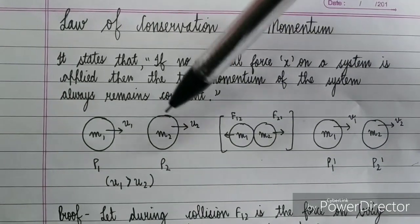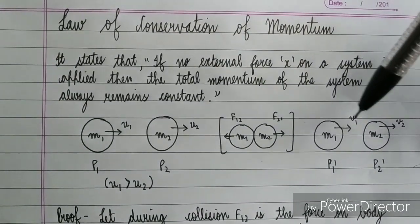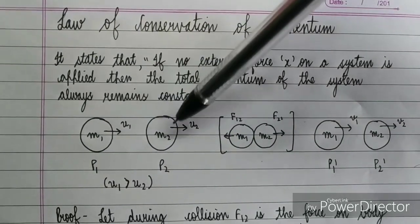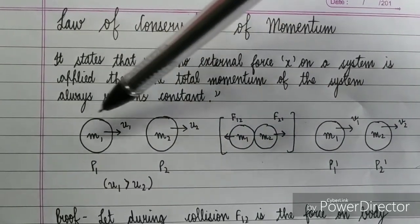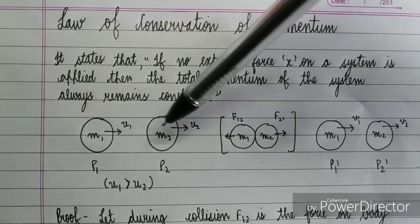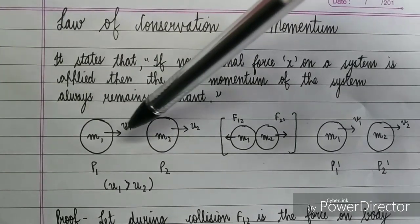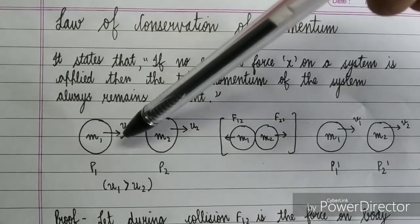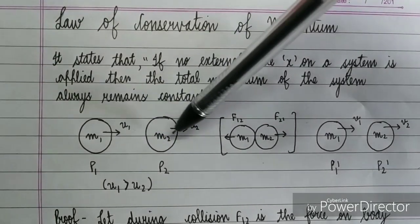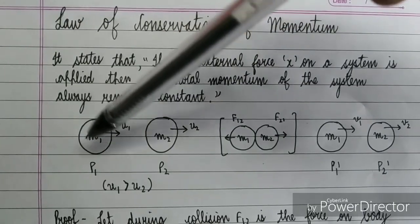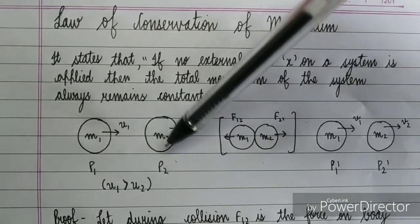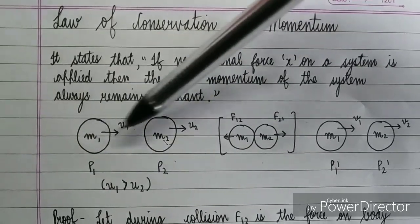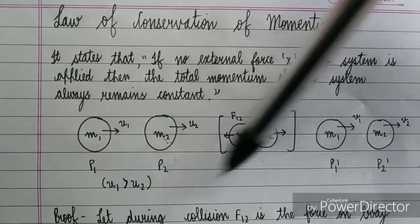Basically I have shown here 3 diagrams. First of all, we have a body with mass M1 and the second body with mass M2. These two bodies are going in this direction and I have taken the initial velocity U1 and its initial velocity U2. P1 denotes momentum and P2 denotes the momentum of this body. Now here U1 is greater than U2.